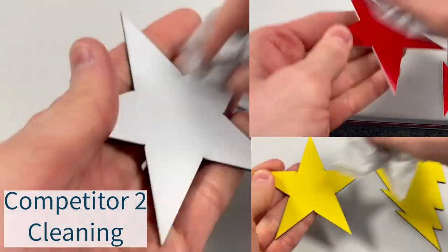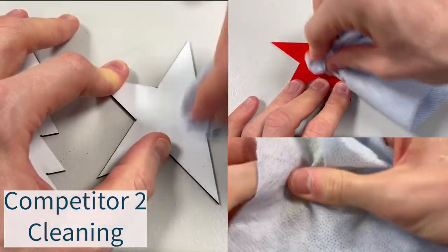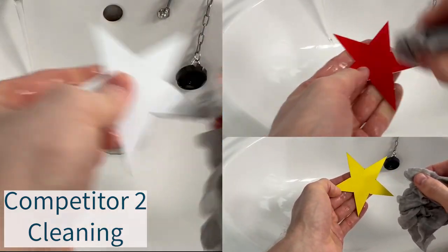Competitor two cleans significantly better than competitor one. However, the process is still longer than cleaning Trotec.